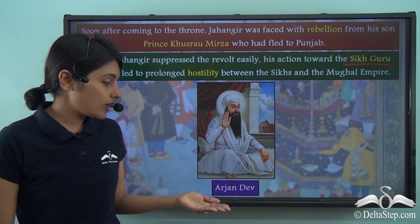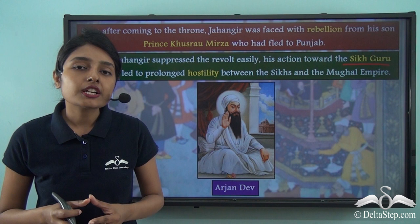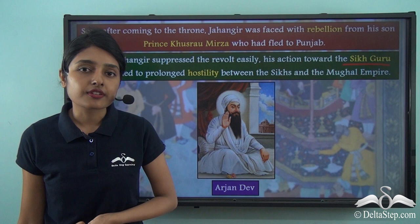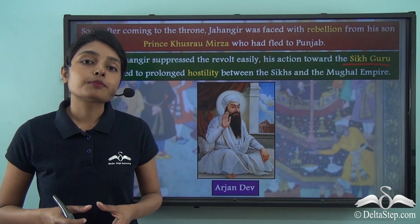When Guru Arjan Dev was asked why he had helped Khusra Mirza in his rebellion against Jahangir, Guru Arjan Dev failed to provide any logical justification. The Mughals then butchered Guru Arjan Dev, and this gave birth to a prolonged hostility between the Sikhs and the Mughal Empire that continued over the years.